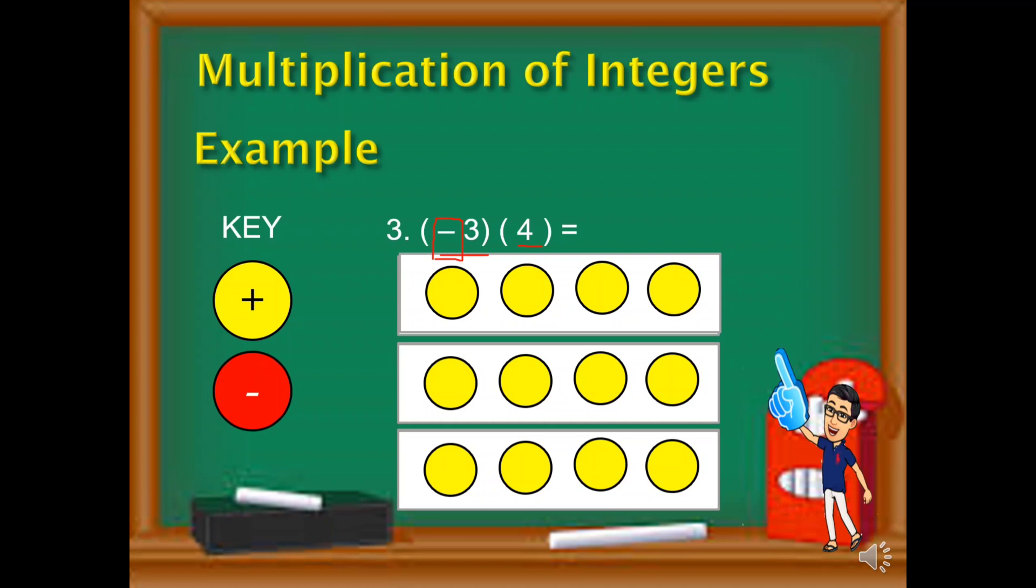Ngayon, saka natin babalikan yung negative na pinag-uusapan natin kanina yung negative 3 kasi di naman natin ginamit. 3 groups lang yung ginamit natin. Ngayon, sabi kanina sa remember this, yung negative means the opposite of the colors. Yun yung ibig sabihin ng kaninang opposite. So ibig sabihin yung mga yellow dito, papalitan natin ang opposite color which is red. So yung positive, parang ganun, gagawin naman natin yung negative.